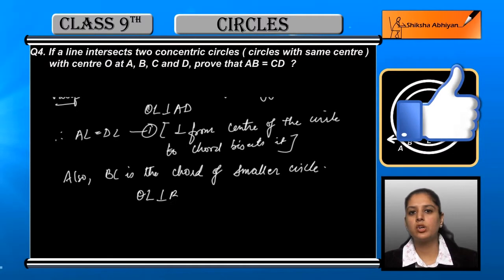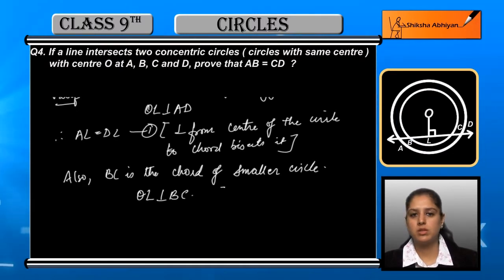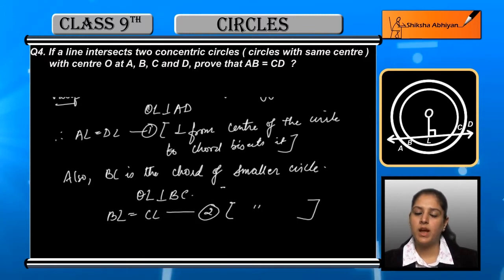Now OL and BC are perpendicular to each other. If they are perpendicular from the center to the chord, they bisect each other. So BL is also equal to CL. This is equation number 2, and the reason behind this is similar.